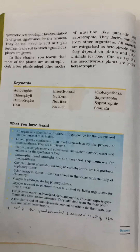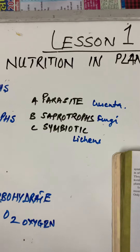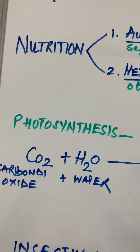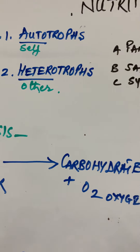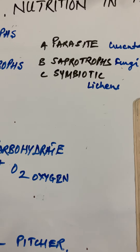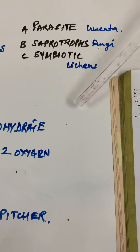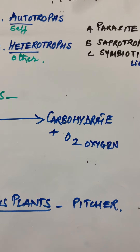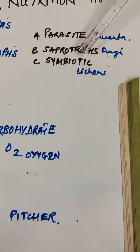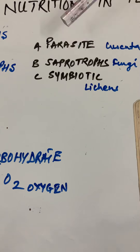Let's see the mind map of this lesson. Nutrition is of two types: autotrophs and heterotrophs. Autotrophs are self-nourishing and carry out photosynthesis. Heterotrophs depend on others and include parasites, saprotrophs, and symbiotic relationships.